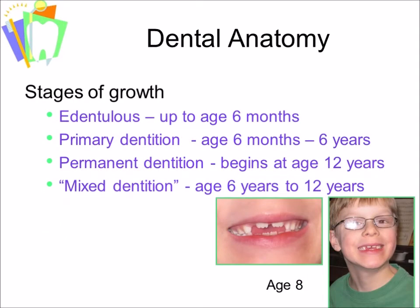We only have two dentitions, but there is also a stage of life called the mixed dentition — that is when there are both primary teeth and permanent teeth in the patient's mouth. Another stage of growth is when the child is edentulous, which is up to age 6 months. The primary dentition typically spans age 6 months to 6 years, and permanent dentition begins at 12 years after the mixed dentition is complete.